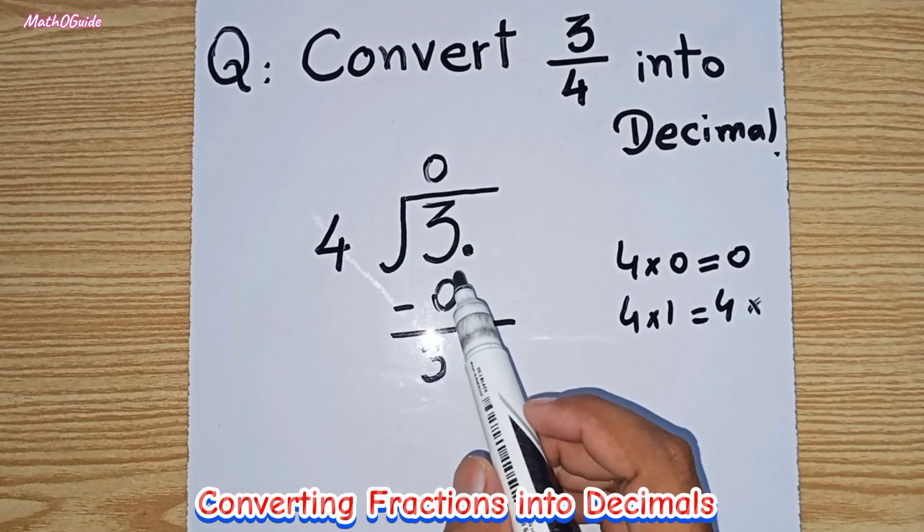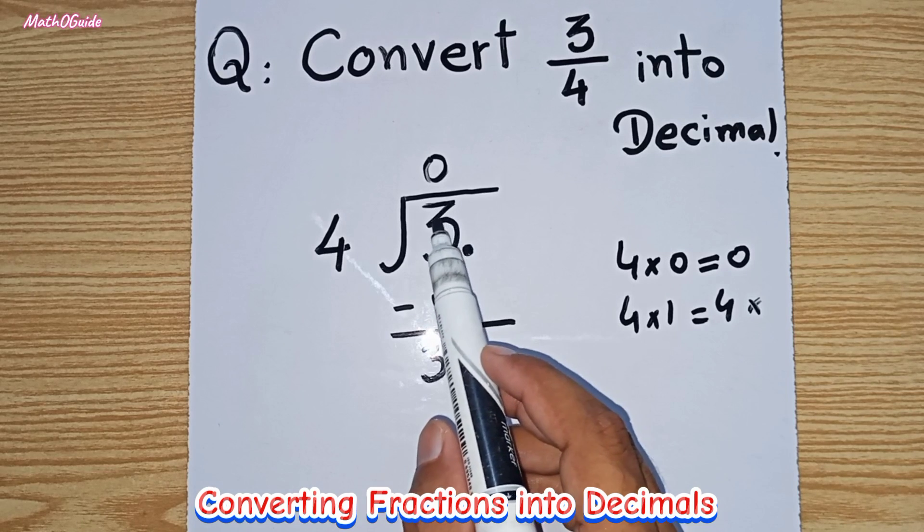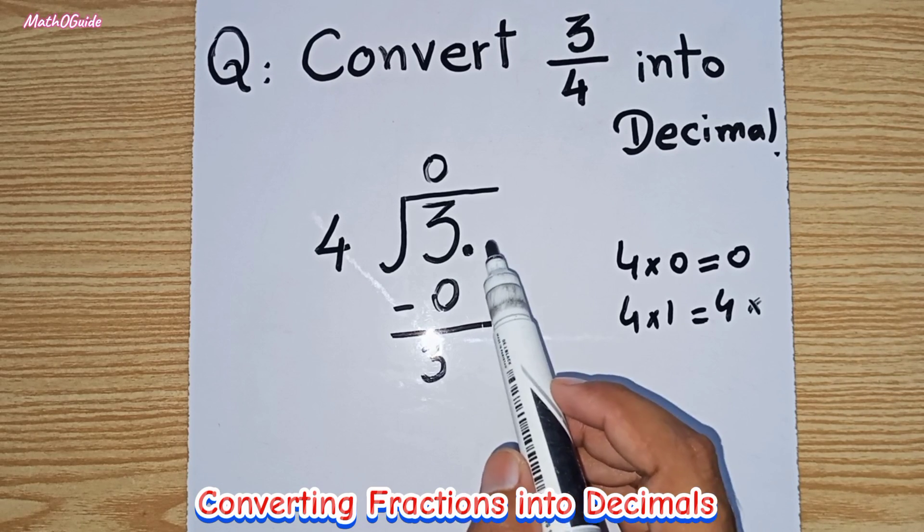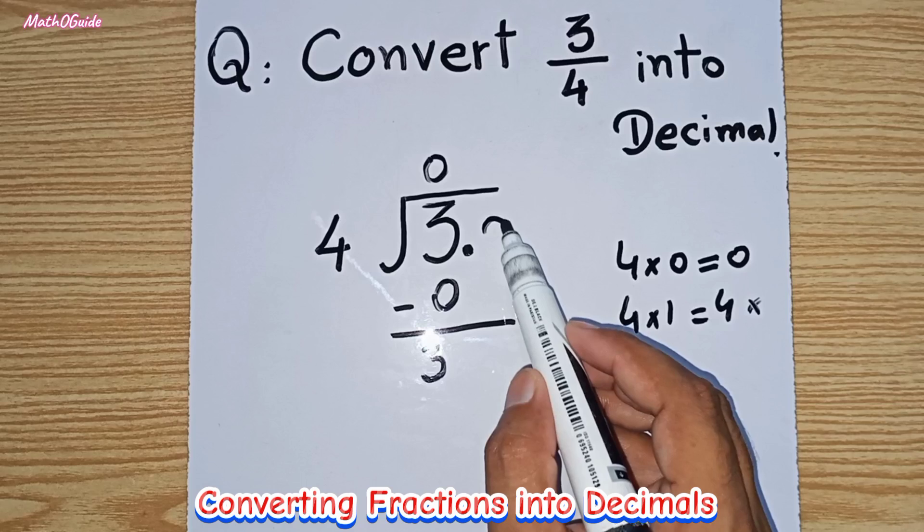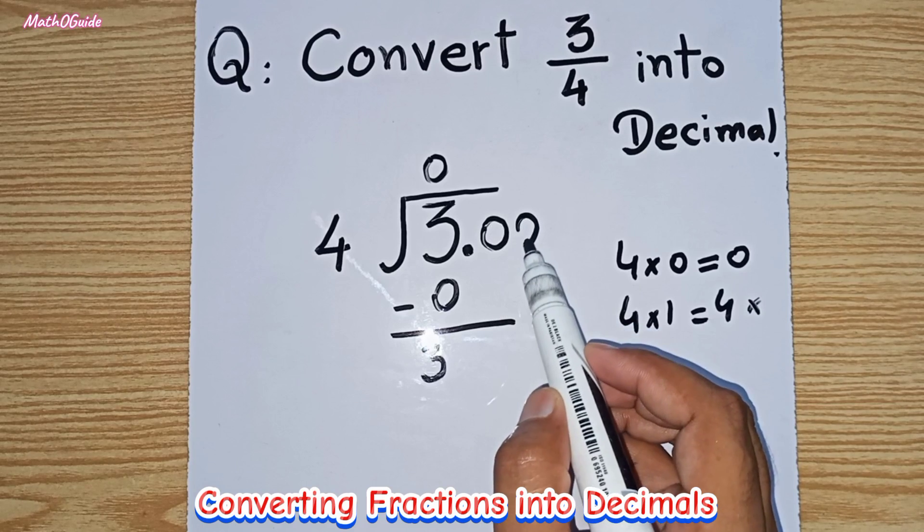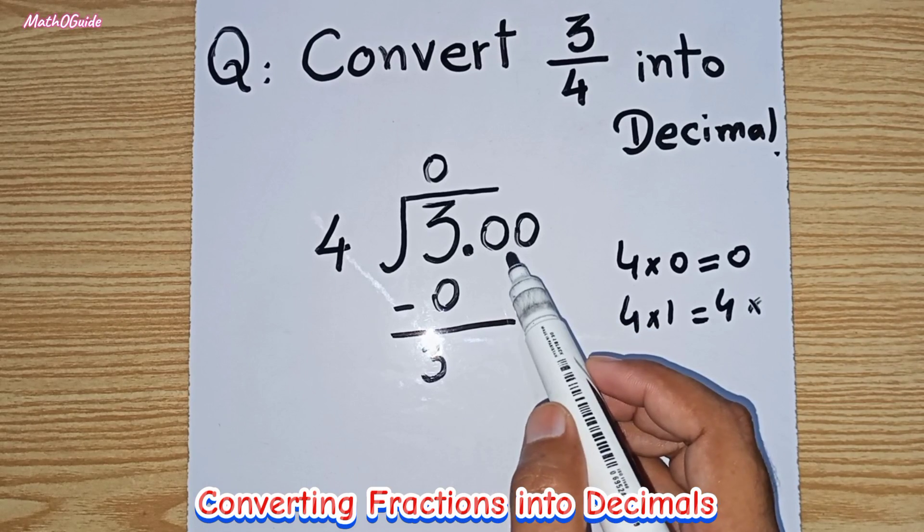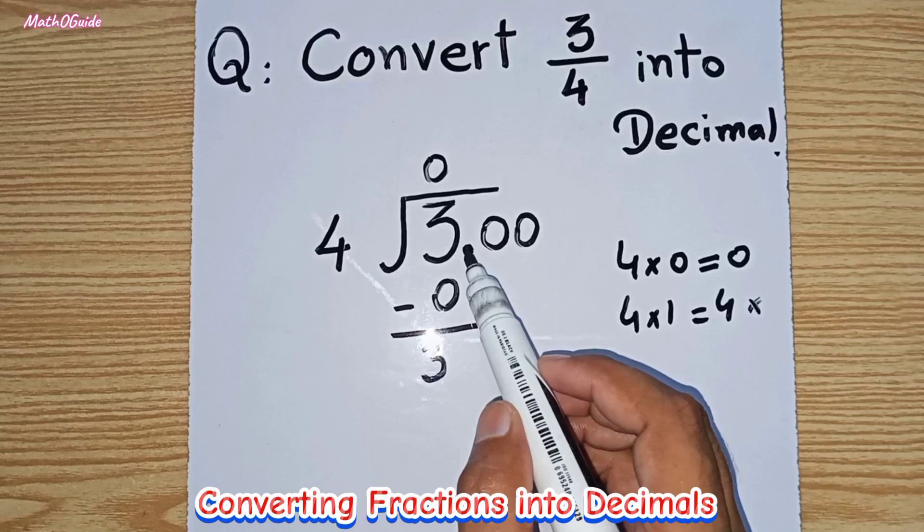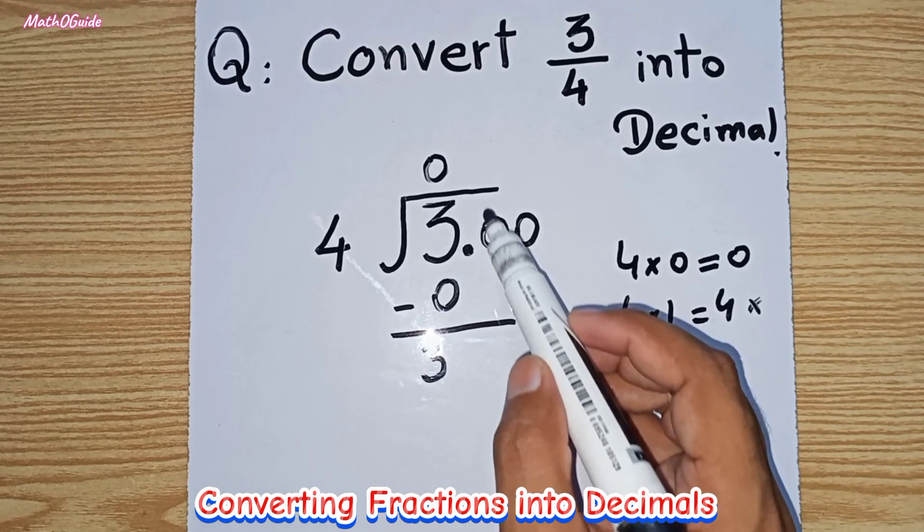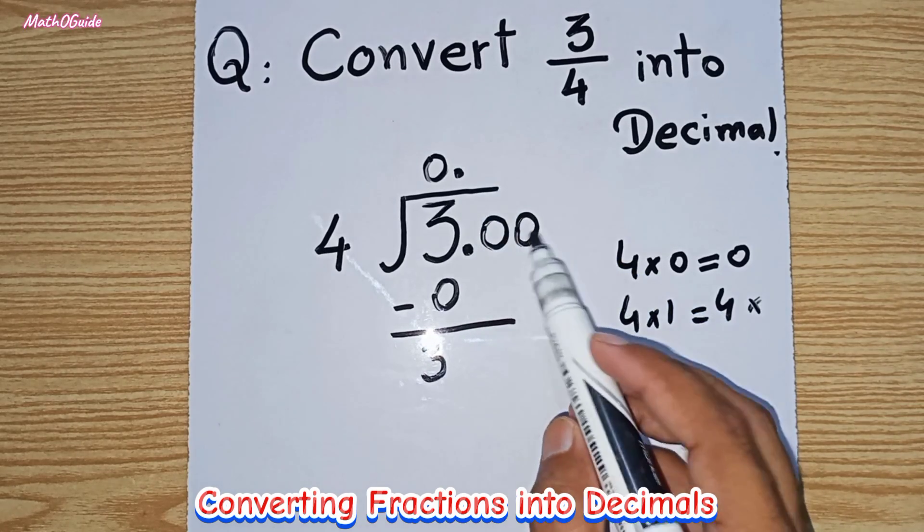Here is a very important step: when we have ended the whole number, we can put a decimal point, and after the decimal point we can write as many zeros as we want. I have written two zeros. When we plot the decimal point here, we have to also write the decimal point in the quotient.